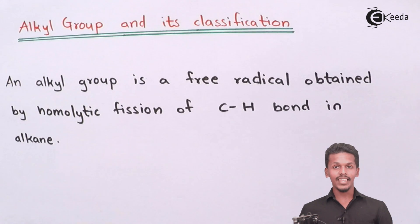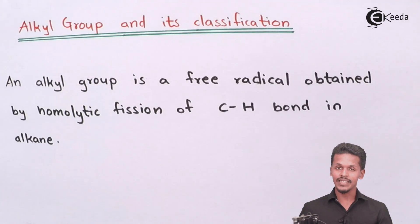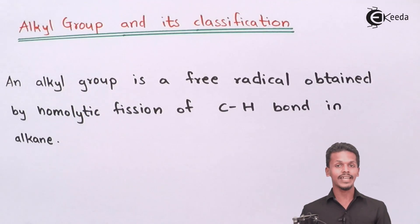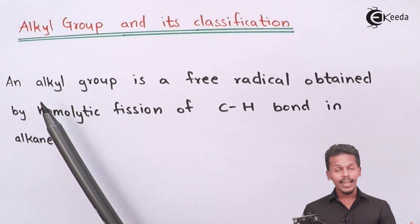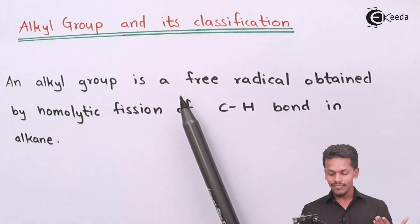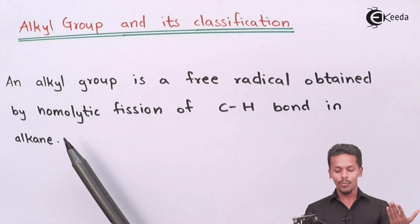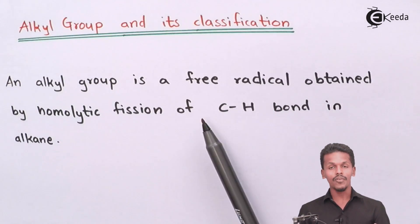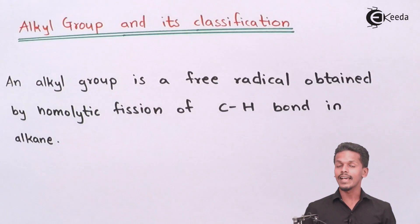Before understanding the classification of alkyl groups, it is very necessary for us to understand what an alkyl group actually is. An alkyl group is a free radical obtained by homolytic fission of the carbon-hydrogen bond in an alkane.